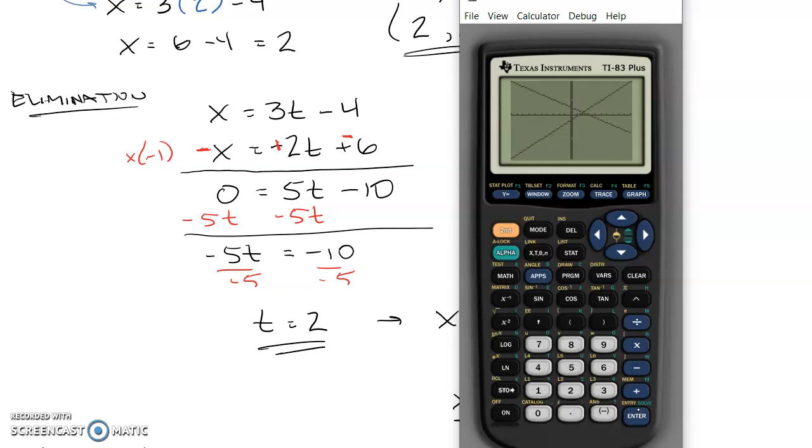And we're looking for that intersection. And the calculator can calculate the exact value. Above the trace button, if you use second trace, number 5 is intersect. It's going to ask you, is this the first curve? I'll hit enter. Second curve, yep, I'll hit enter again. And it says take a guess. If it's the only intersection, you don't even have to move it. But I can move the cursor closer to it and hit enter. And it's going to calculate that x is 2, y is 2.